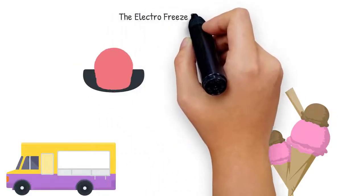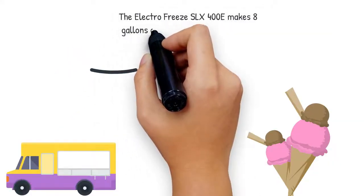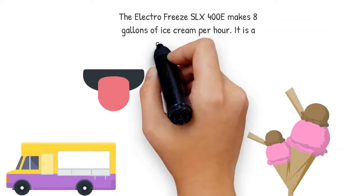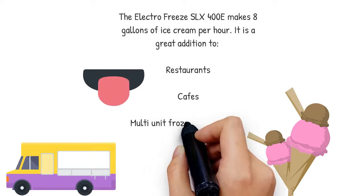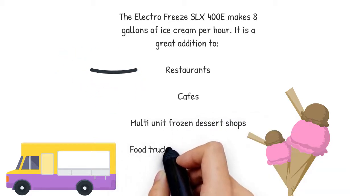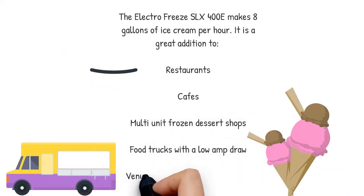The ElectroFreeze SLX400E makes eight gallons of ice cream per hour. It is a great addition to restaurants, cafes, multi-unit frozen dessert shops, food trucks with a low amp draw, and venues where ice cream is not the main product.